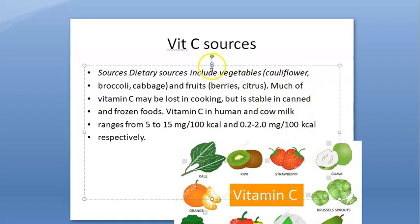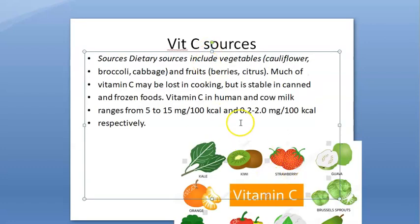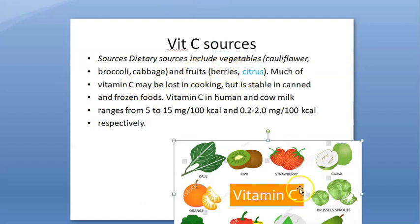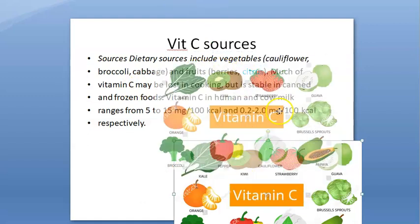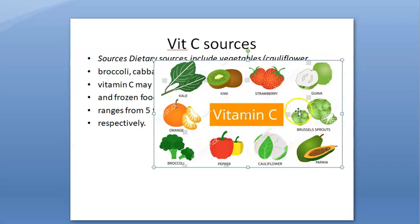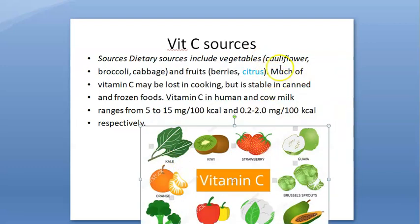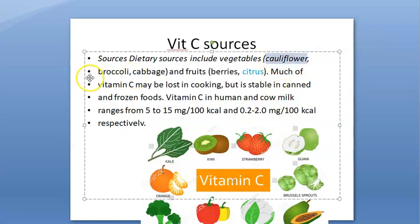So how do we get it? We get it mainly from citrus fruits like orange and lemon. Other sources include cauliflower, broccoli, and cabbage. These are actually called goitrogens, but they give vitamin C.